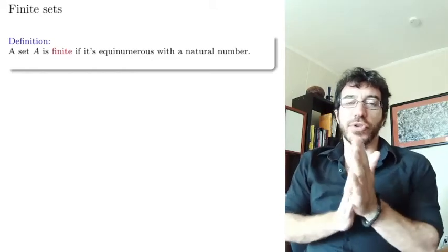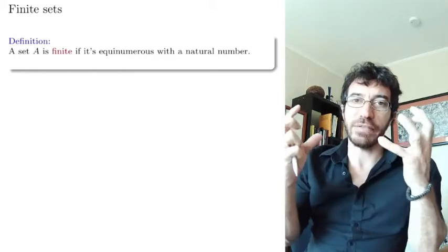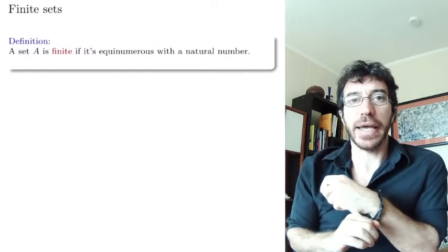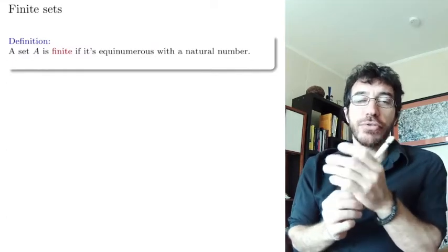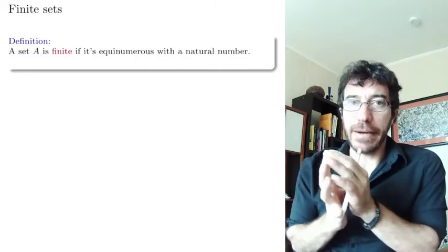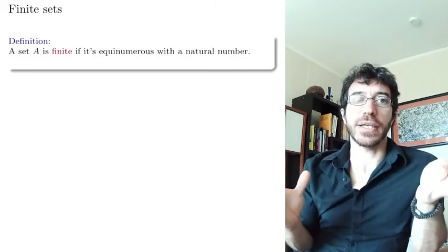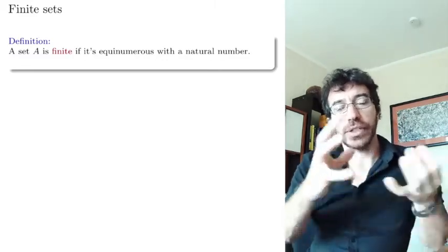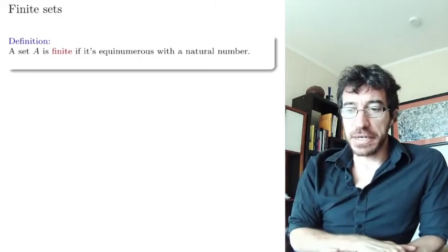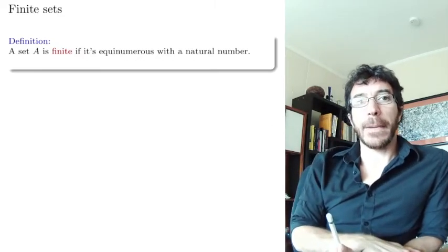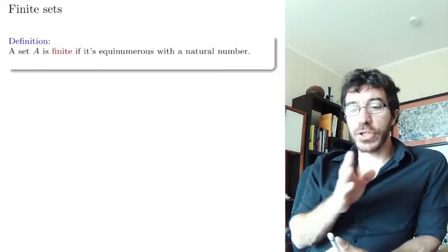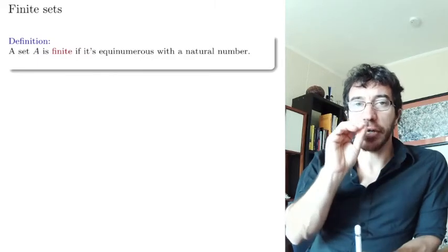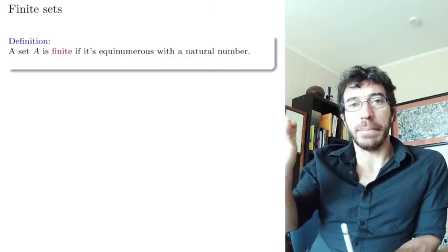Now that we know what it means for two sets to have the same size, let's start considering smaller sizes and analyzing sets. The first thing to study is finite sets. There are various ways we're going to define finite versus infinite, and none of them is obvious. We're going to say that a set is finite if it's equinumerous with a natural number.